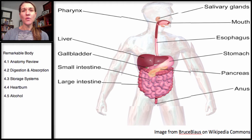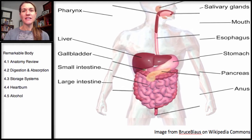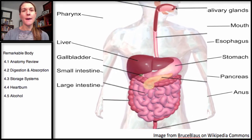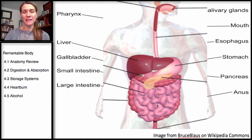We'll start with the mouth, where digestion begins, with the salivary glands releasing enzymes. Food travels down the esophagus to the stomach, then into the small intestines. The pancreas, liver, and gallbladder are all involved, and we'll get into each of those functions next.